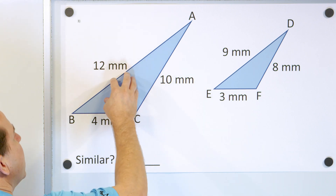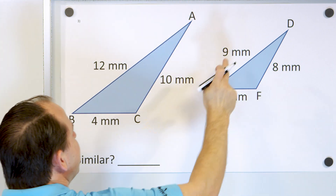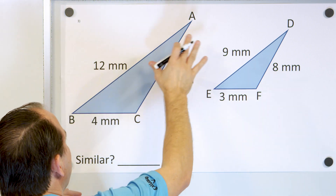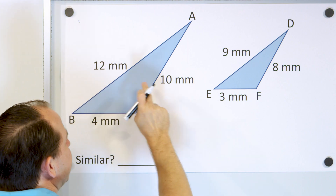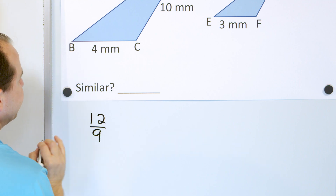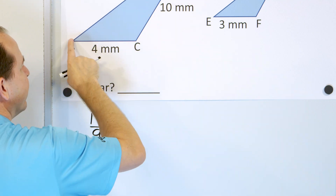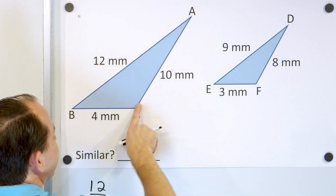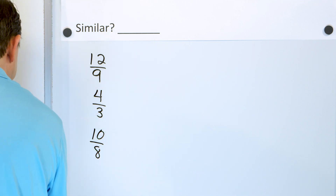Let's look at problem number 3. We have triangle 1 and triangle 2 — are they similar? We'll compare 12 millimeters to 9 millimeters, giving ratio 12/9. Then we compare the next pair: 4 compared to 3, giving 4/3. And the last pair: 10 compared to 8, giving 10/8.